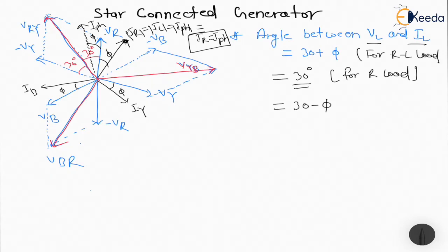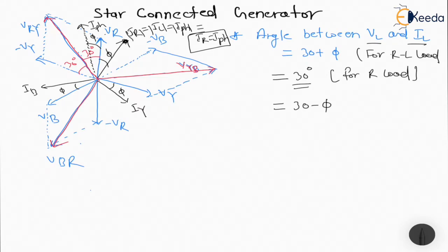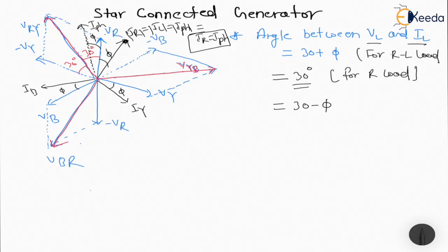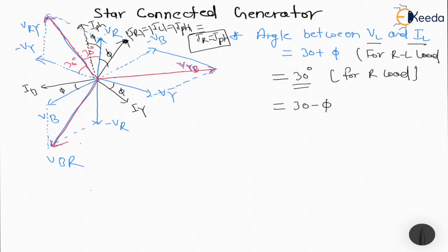Another point: in star connection, between any two adjacent phase voltages the angle will always be 60 degrees. For example, the angle between Vr and Vy is 60 degrees, between Vr and minus Vb is 60 degrees, and between minus Vb and Vy is also 60 degrees.